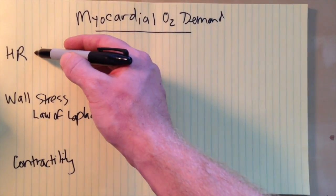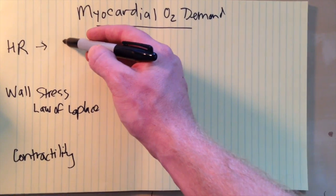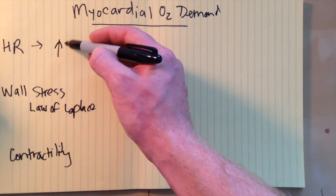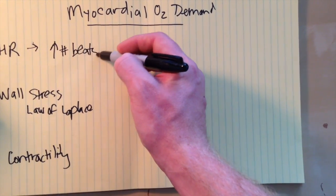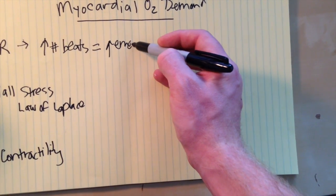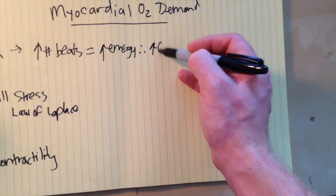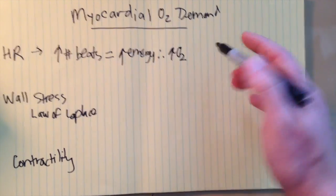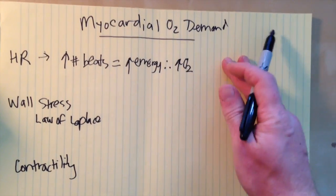Well it works in a similar way to increase the oxygen demand. If you have an increased heart rate equals an increased number of beats and each beat requires energy. So you're going to need more energy and therefore more oxygen because we know that oxygen is required to produce the energy that results in the heart contracting.